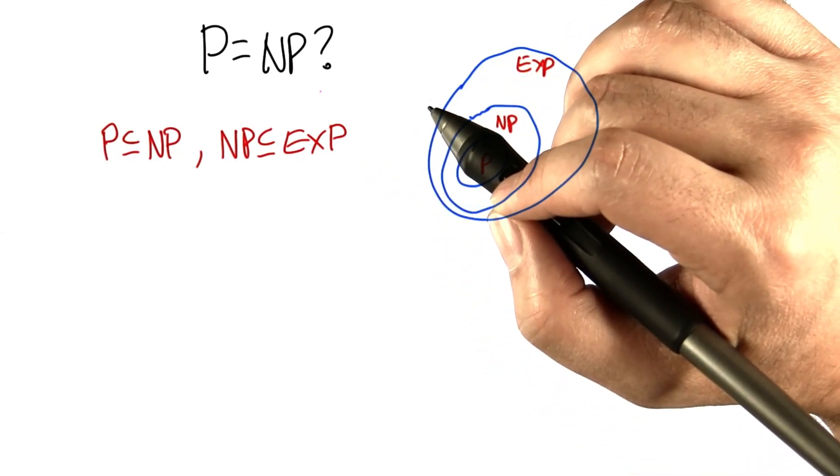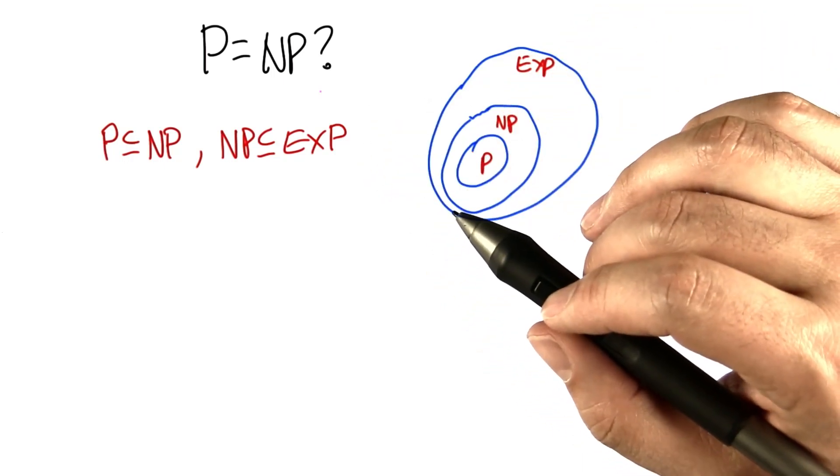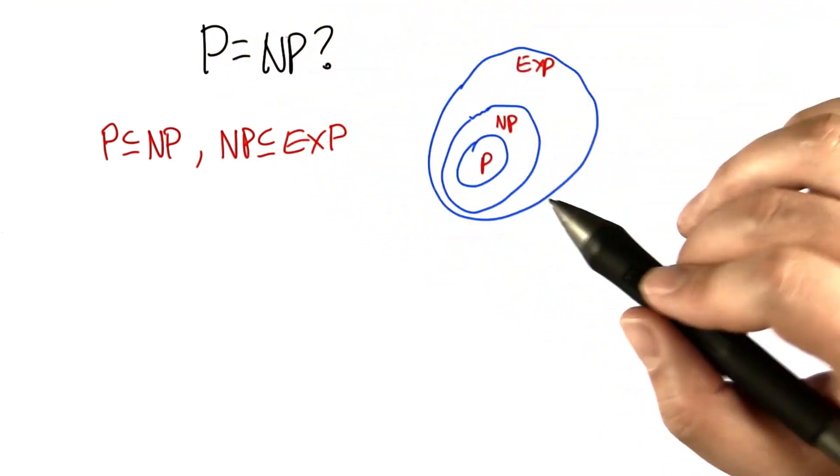This brings us to a point where we can ask one of the most fundamental questions in theoretical computer science, and that is, does P equal NP?